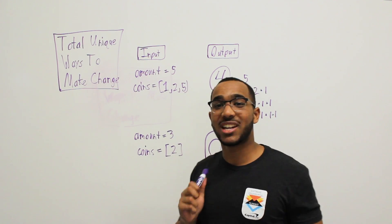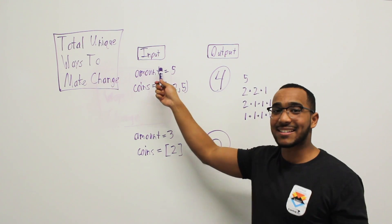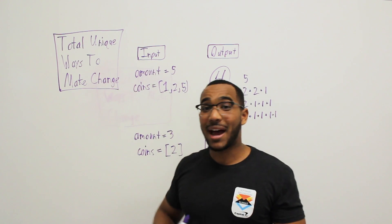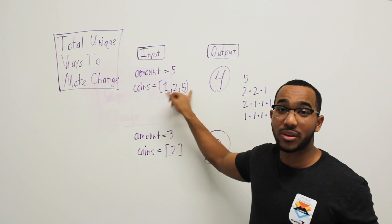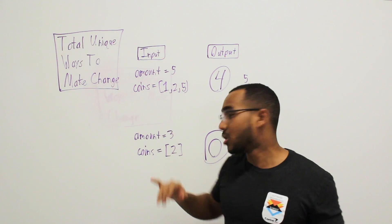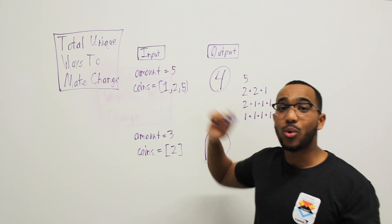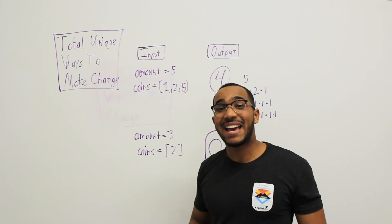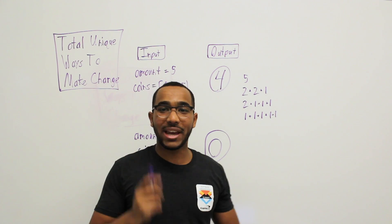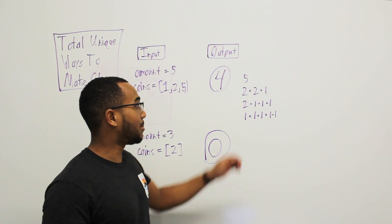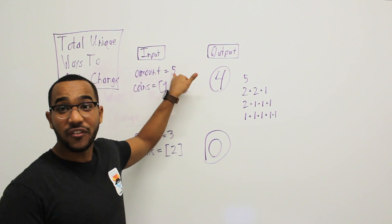So what is this question asking us? It is asking us, given an amount and a certain amount of coins — one, two, and five coins, or we could just get a two coin — given an amount, we need to say how many unique ways are there to make change for this amount.